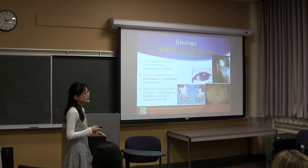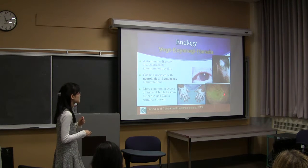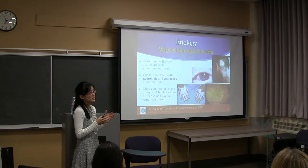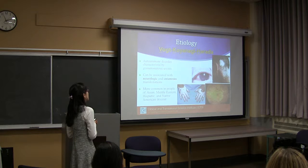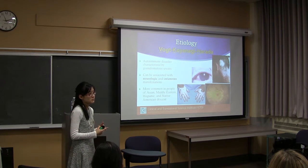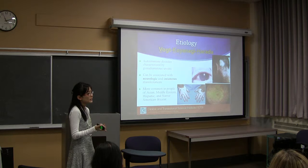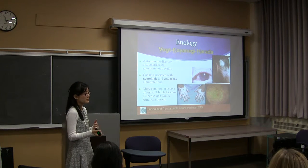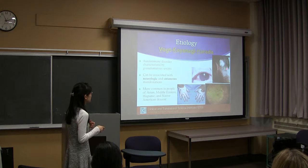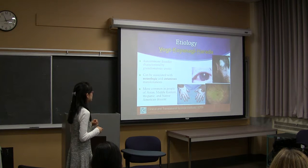VKH is an autoimmune disorder characterized by granulomatous uveitis, often found with serous retinal detachments. It is thought to be T-cell mediated, with helper T-cells attacking melanocytes that contain melanin. It can be associated — but not always — with neurologic or cutaneous manifestations. Neurologic symptoms include meningismus; up to 75% of people can have auditory symptoms like tinnitus or vertigo, and more rarely encephalopathy or focal signs like cranial neuropalsies or hemiparesis. Cutaneous symptoms include alopecia, poliosis — decreased or absent melanin in melanocytes of body hair — and vitiligo.